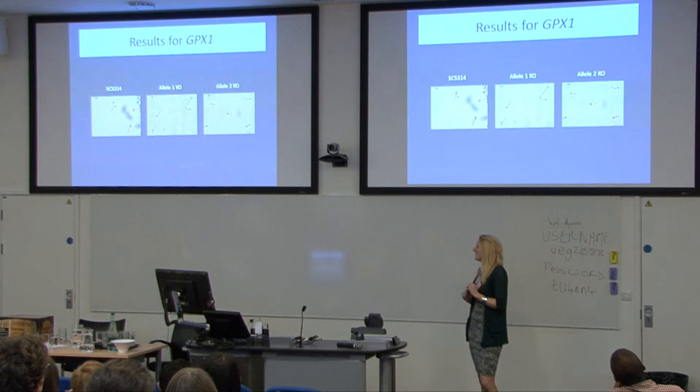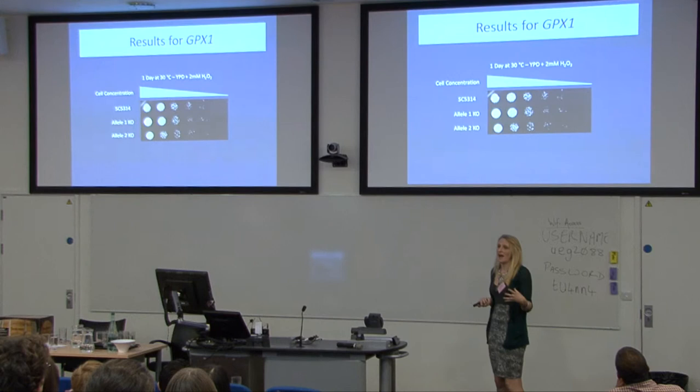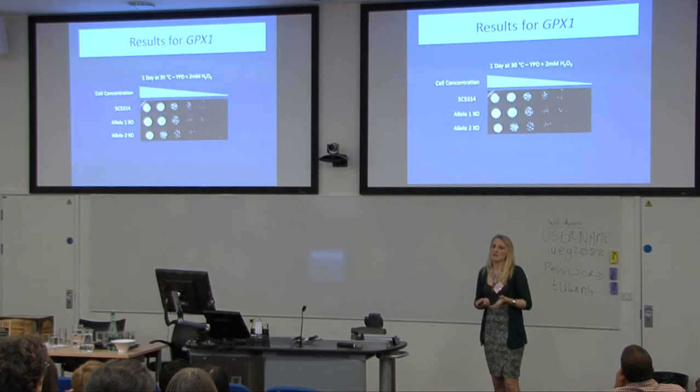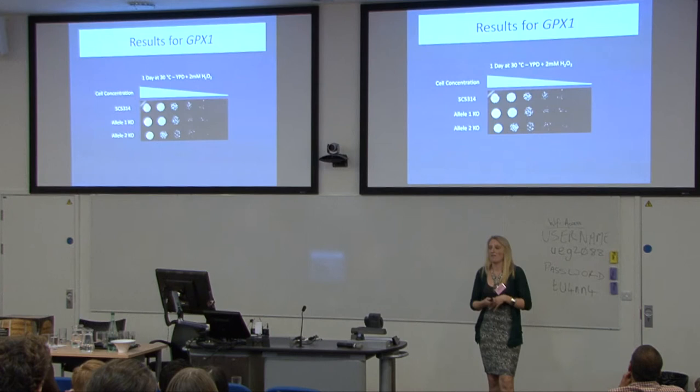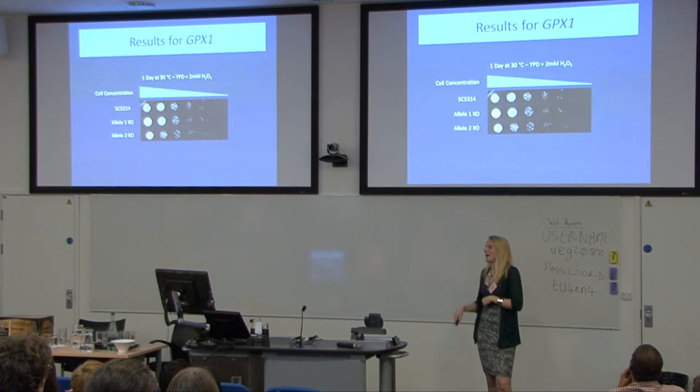For each of my knockouts I also did gene-specific tests. For the glutathione peroxidase, we would expect involvement in oxidative stress. This shows growth on hydrogen peroxide, and we can again see the wild type and both knockouts grow quite happily. This was the case for all tests — there was no difference between my allele 1 and allele 2 knockouts.